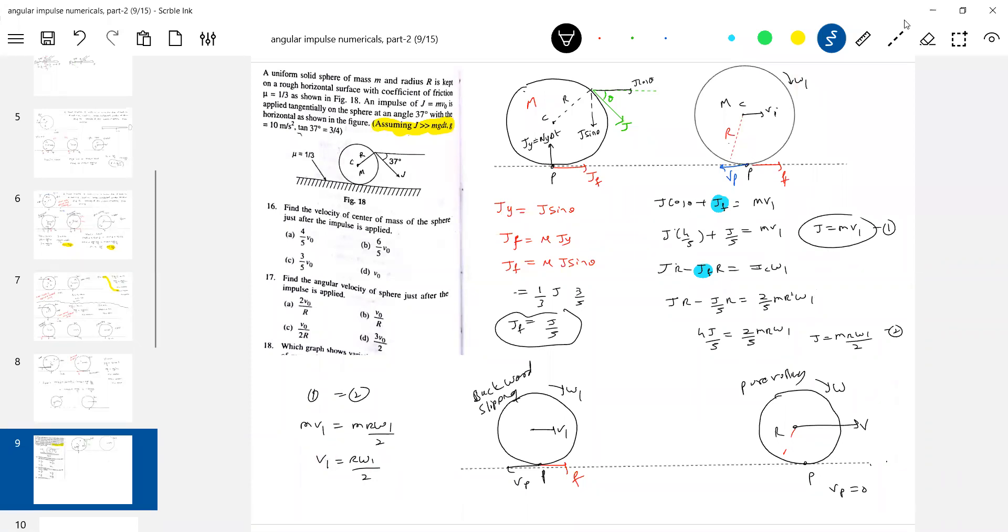Find the velocity of center of sphere just after impulse is applied. So what is v1? J equal to m v0, substitute v1 equal to v0. Find the angular velocity of the sphere just after the impulse is applied. 2 v0 by r. And now finally, when it attains pure rolling. So let me find out that also. After what time it will attain pure rolling. Does everything happen at t equal to 0? What is the time taken for it to attain pure rolling? You solve it. So what is our answer? So v1 equal to v0 and omega 1, 2 v0 by r and v0.